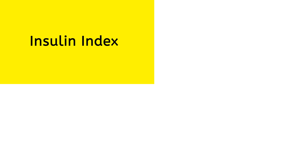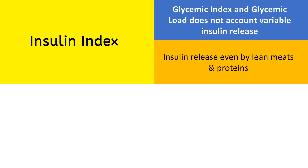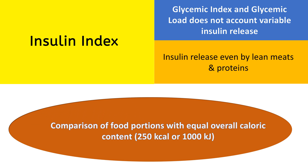More important than these two is the Insulin Index, because food items with similar Glycemic Index and Glycemic Load can cause different insulin release in different people, which can cause weight gain. Insulin is also released by lean meats and proteins, which do not have many carbohydrates. So Insulin Index compares food portions with equal overall caloric content, that is 250 kilocalories.